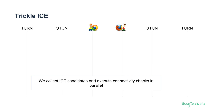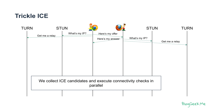We use Trickle ICE. In Trickle ICE, what we do is we collect the candidates in parallel to doing the connectivity checks. So when we start, we go and send the offer, while at the same time going and checking with the STUN and TURN servers for our IP addresses. We get the answer from the other side immediately, and he then goes and asks the same things from his STUN and TURN servers. But connectivity checks start immediately by using the local IP addresses, and then whenever we have a new address, we simply report that over an ICE candidate message. We can add these ICE candidates along the way, which shortens the time it takes to conduct ICE connectivity checks.